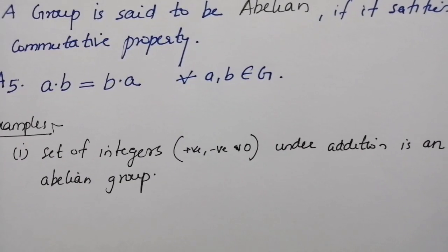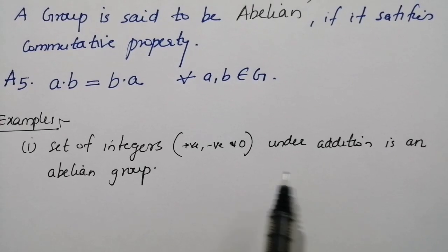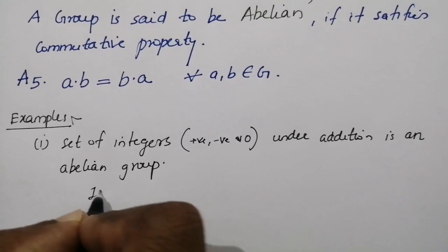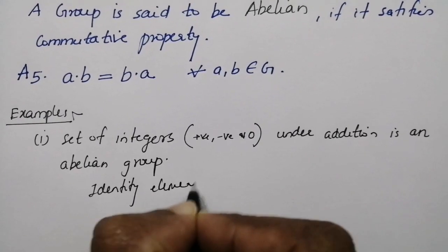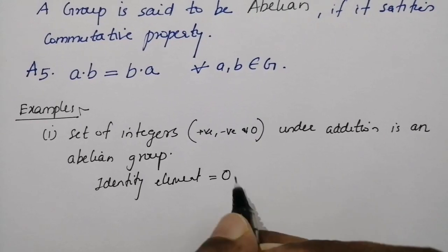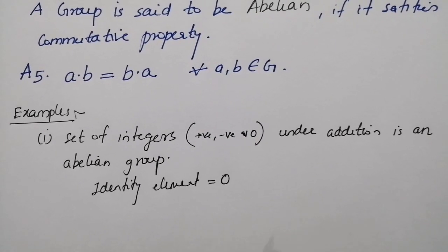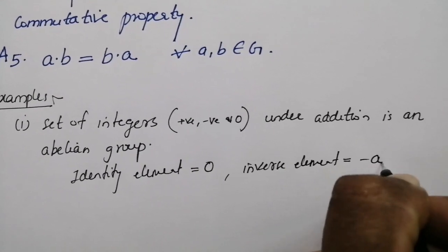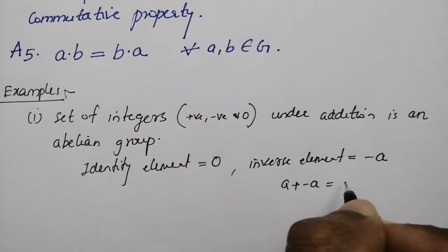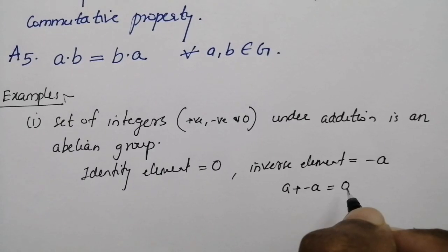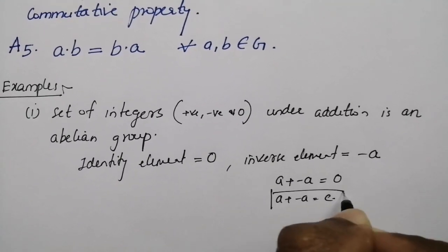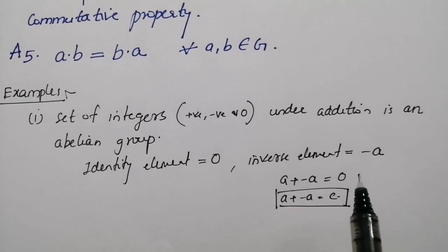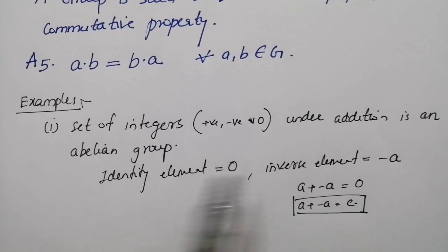Now we will look at some examples for abelian group. First, the set of all integers under addition is an abelian group. In this case, the identity element will be 0, so that a + 0 = 0 + a = a. And the inverse element will be −a, that is a + (−a) = 0, which equals the identity element e.